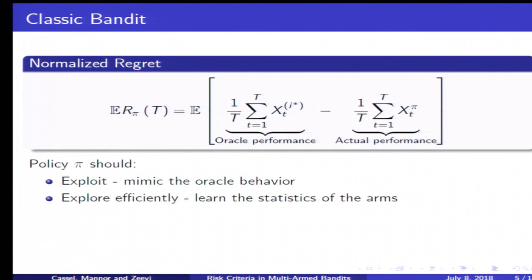Having an oracle, regret is defined—in our case we consider normalized regret since it will coincide better with our results. The regret simply compares the performance of the oracle with that of our policy. Our policy should exploit, meaning mimic the behavior of the oracle, and it needs to explore to learn the statistics of the arms.